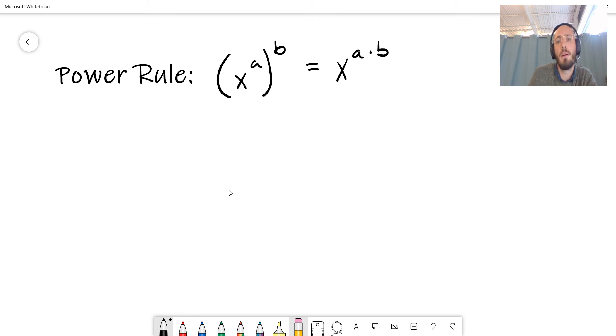So a power raised to another power is equal to that same base, and then we multiply the powers together. Let's take a closer look. I think this will make a little bit more sense.